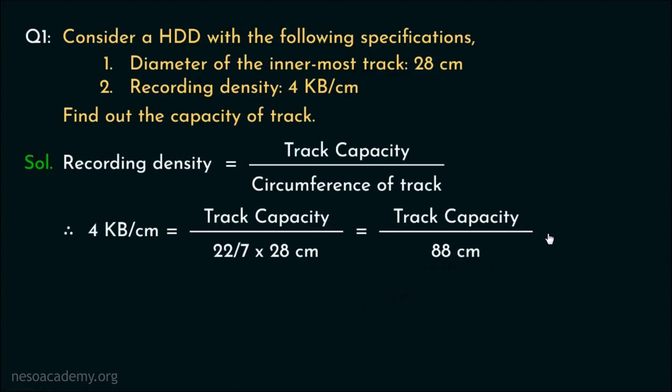Multiplying both the sides of the equation with 88 cm, we can obtain the track capacity as 88 cm multiplied by 4 KB per cm. So these 2 cm units will cancel out each other. So we are left with 88 multiplied by 4 KB which amounts to 352 KB.